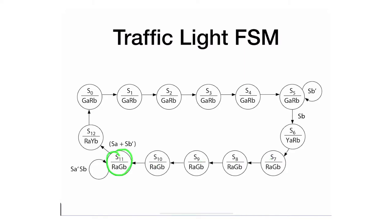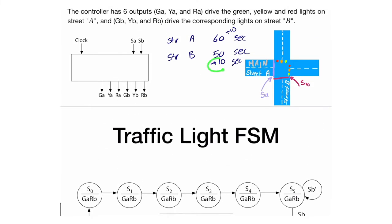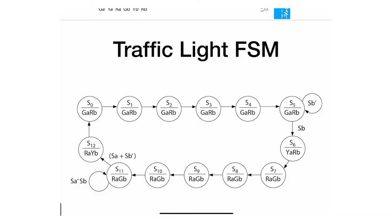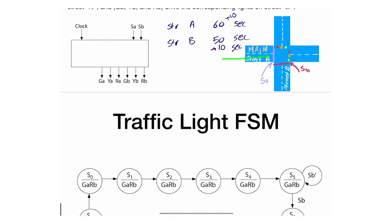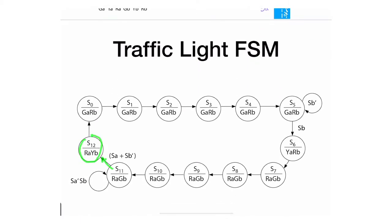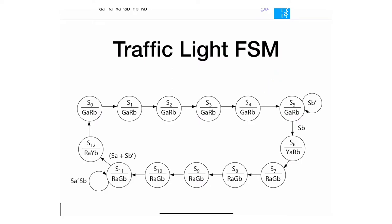Street B green should last for 50 seconds — five states. After that, as long as there are no cars on A and there are cars on B, we keep extending in 10-second increments. An OR condition triggers leaving the B-green states: either a car appears on street A (it takes priority as the main street) or street B has no more cars. Then we transition to a state where A is still red and B turns yellow, then back to street A green for at least 60 seconds.